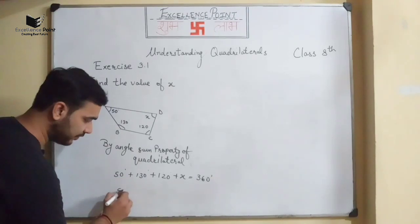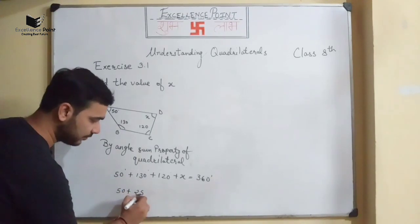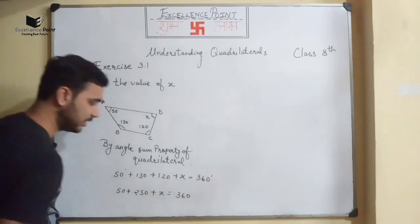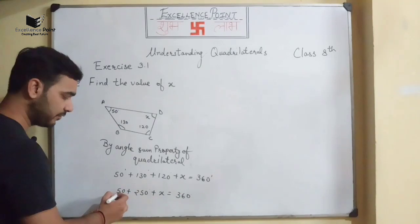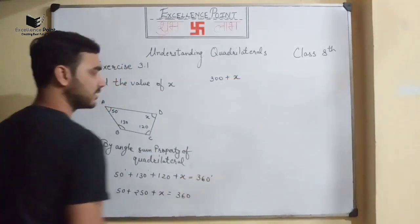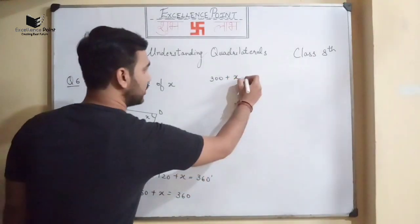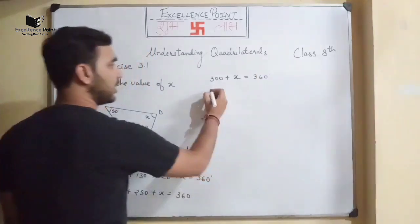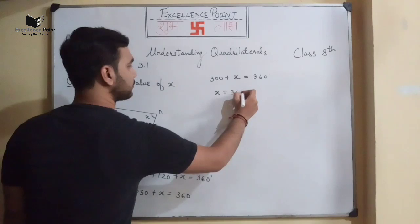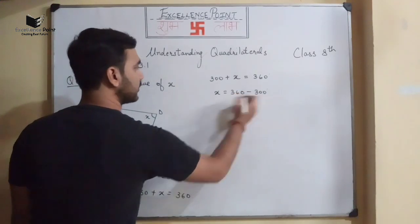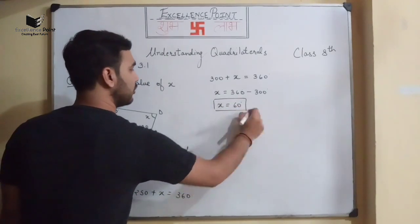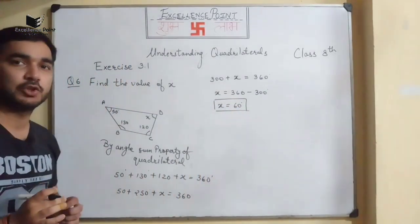50° + 130° + 120° + x = 360°. Now adding: 50 + 250 = 300, so 300 + x = 360°. Therefore x = 360 − 300, so x = 60°. The final value for x will be equal to 60 degrees.